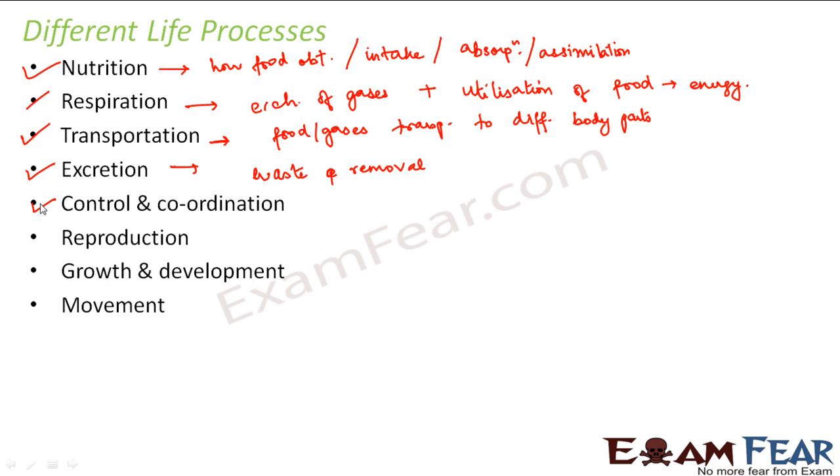Right? So that means there is a synchronization between our finger and our brain. So both of them together performed this reaction. Correct? So this control and coordination, that means this sensitivity regulation is performed by this life process called control and coordination. So it is nothing but synchronization between organs.